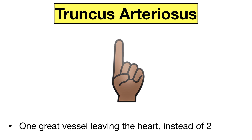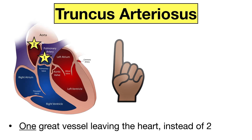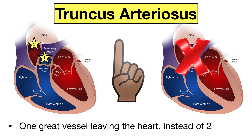The first cyanotic heart defect is truncus arteriosus. You can hold up one finger to remember this. Truncus arteriosus is when one blood vessel leaves the heart instead of two. Normally there are two main arteries leaving the heart: the pulmonary artery leaves the right side and delivers deoxygenated blood to the lungs, and the aorta leaves the left side and delivers oxygenated blood to the rest of the body.